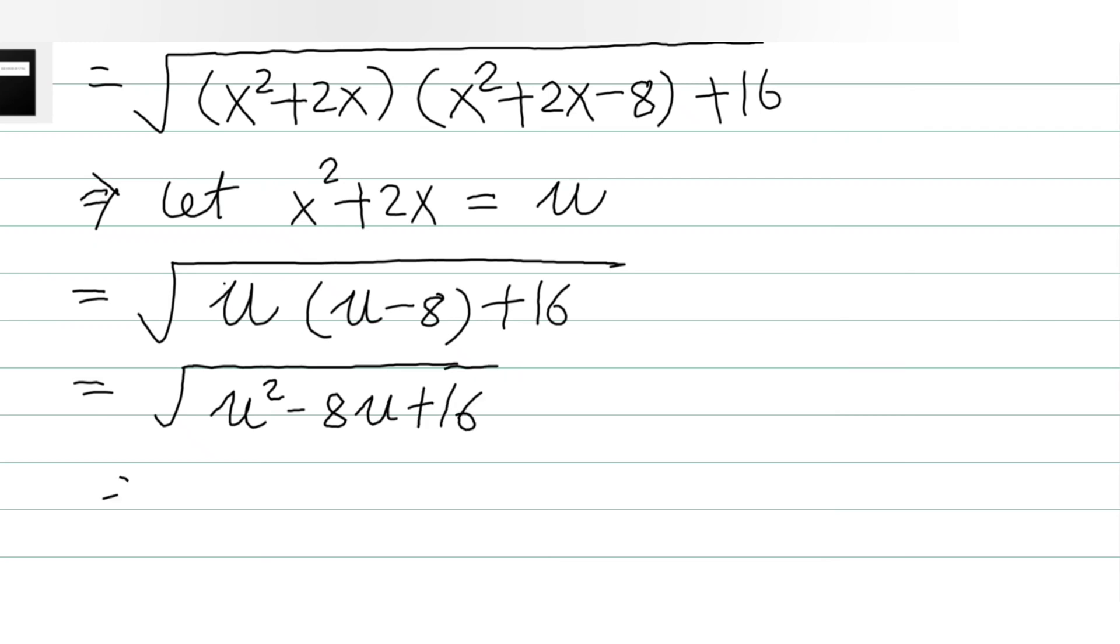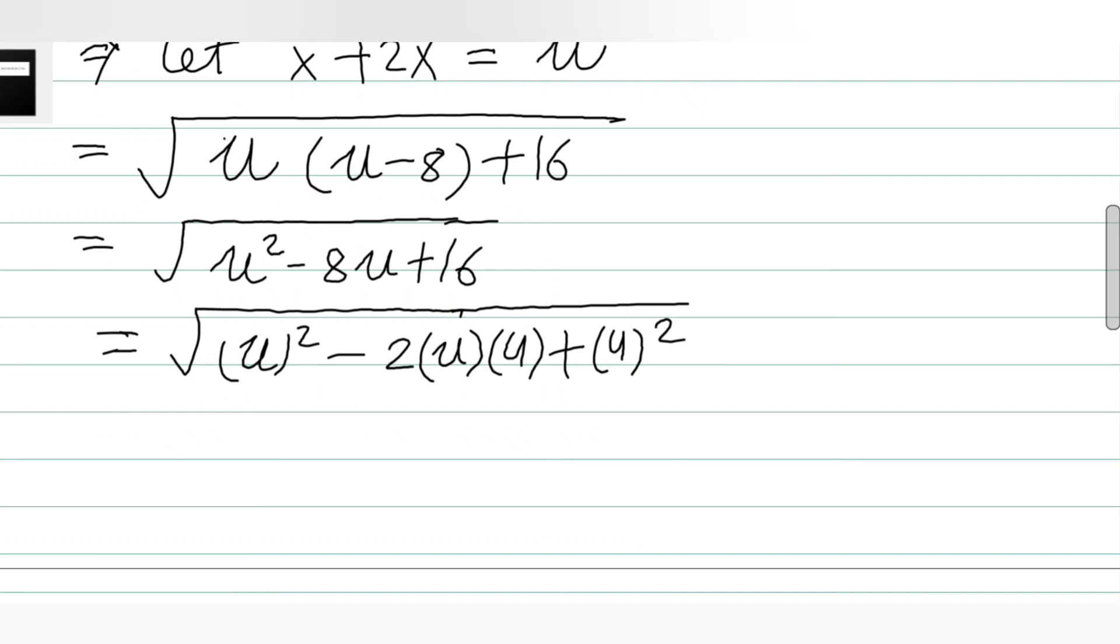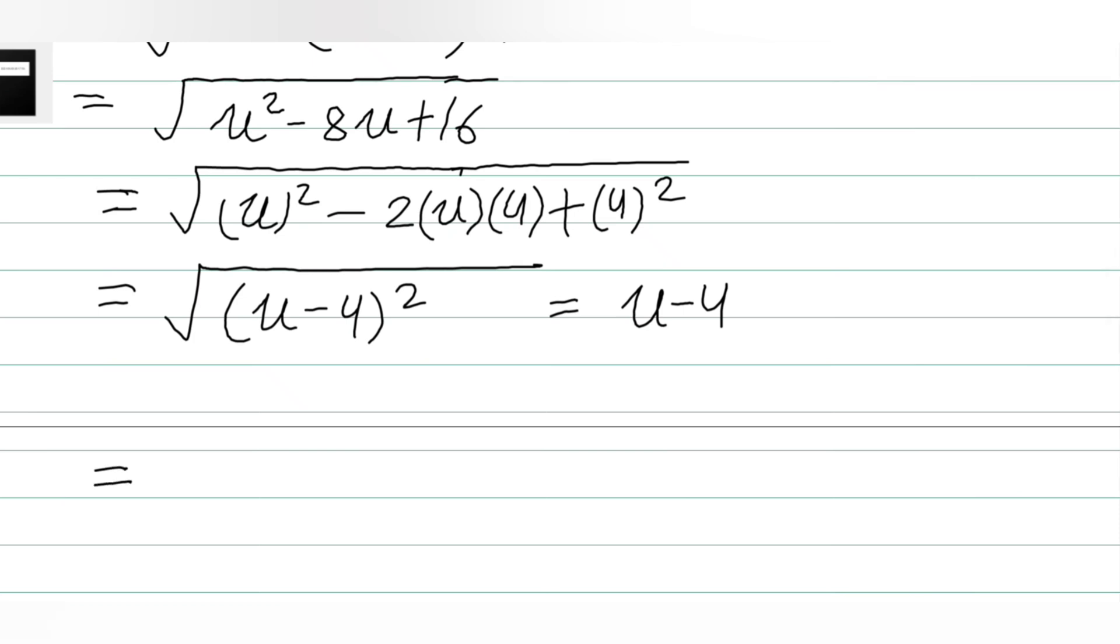Now if you observe carefully, after completing the square method, this can be written as (u-4)². This is nothing but (u-4), and this gives us the value u-4. We have taken u to be x² + 2x, so this is x² + 2x - 4.